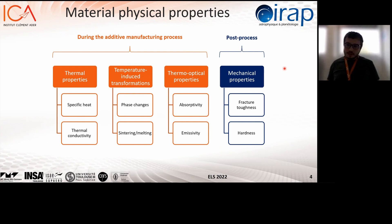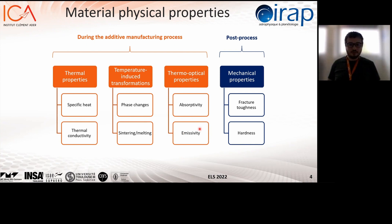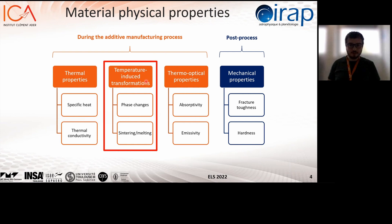If we consider the source material being used, we have to determine which physical properties are relevant in the context of this particular technique. On the right, you have how the energy brought by the laser is absorbed and converted into heat by the material, then how the heat is conducted in the material, and then how the initial phases are converted and transformed with temperature. For the quality of the manufactured object, it's evaluated with the mechanical properties — fracture toughness and hardness in particular, since we are talking about a ceramic material.